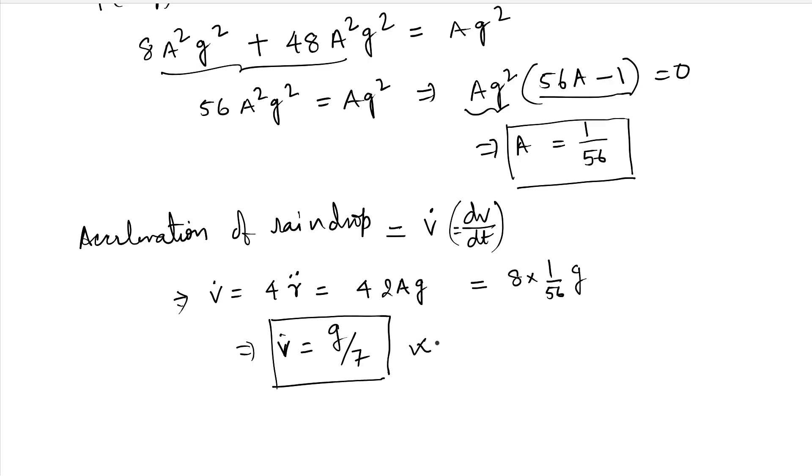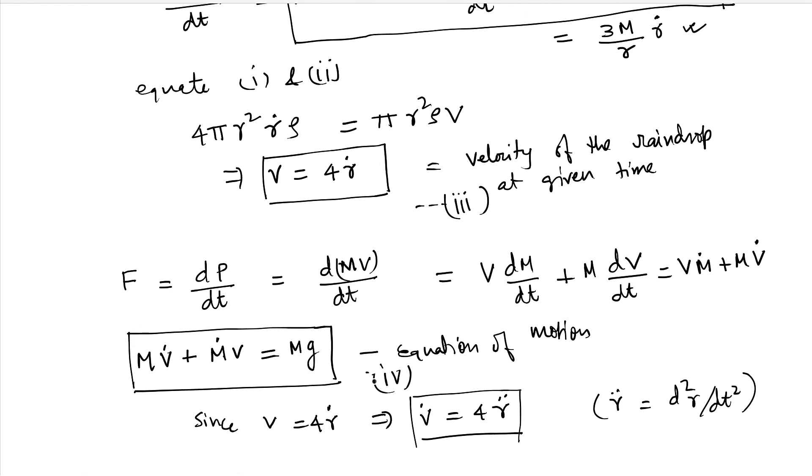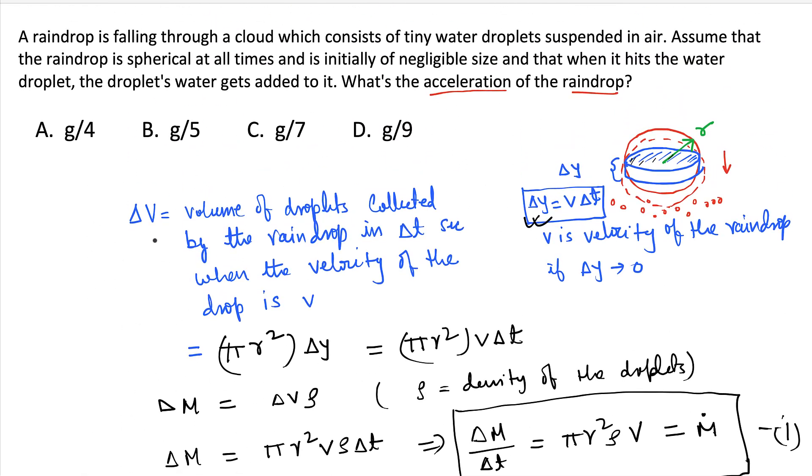So if you see, this is such a nice expression. The acceleration is independent of everything. So acceleration of the raindrop is constant and is independent of everything, of r, mass, everything. This is beautiful. So that's the expression for acceleration. Hence, the answer is C. This is the answer.